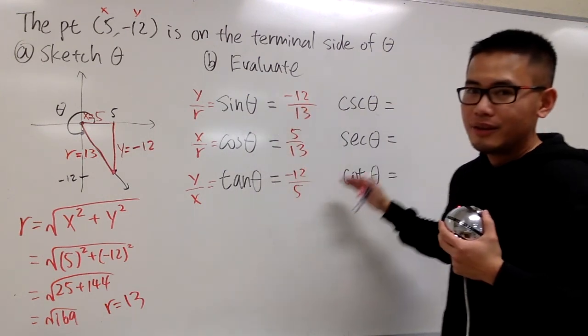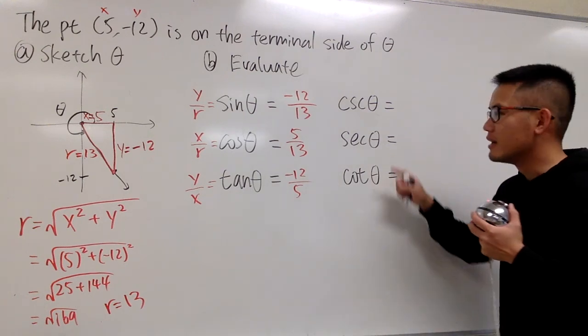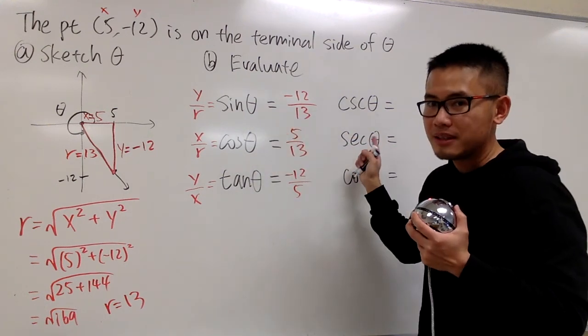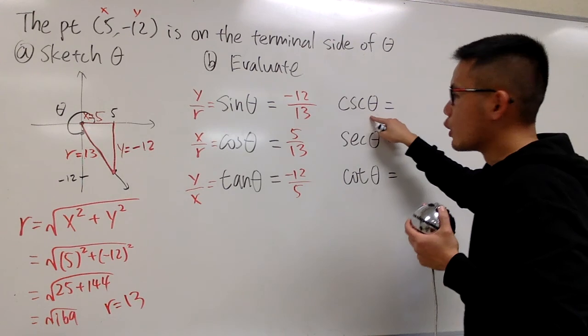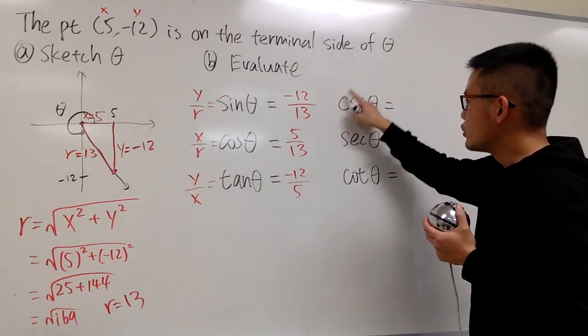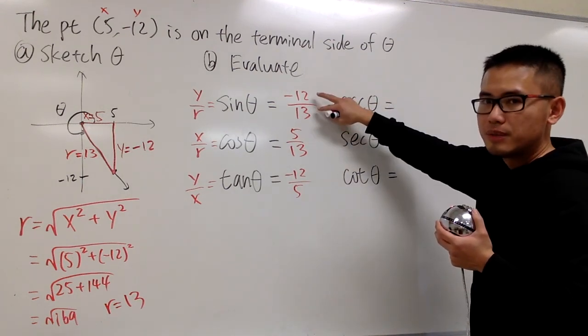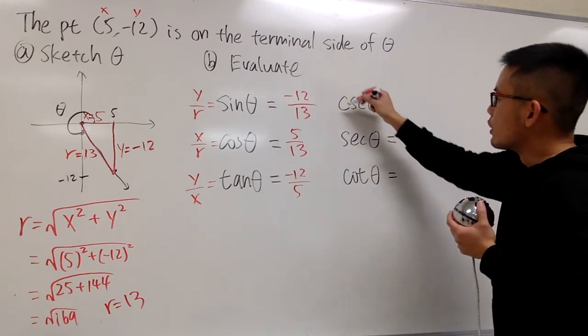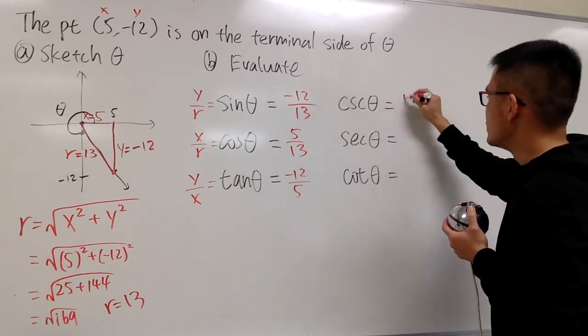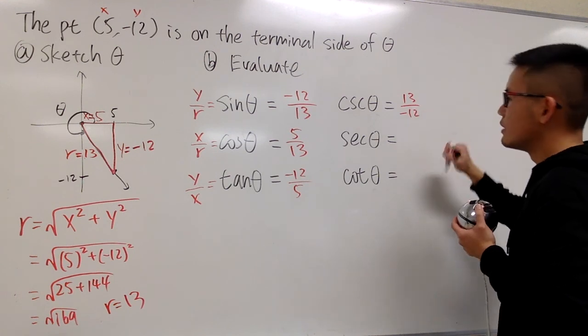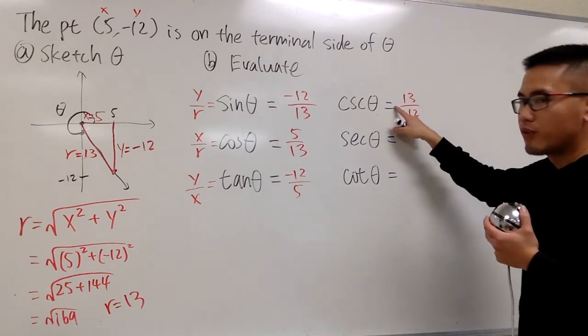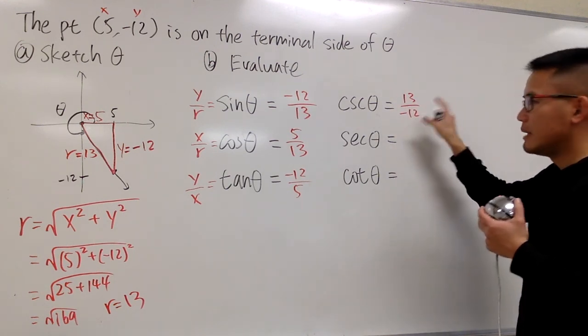Because once you have these three done, these right here are pretty much for free. Because if you set this up correspondingly, sine theta, cosecant theta, you know the relationship of this. And that is, you just flip this. You do the reciprocal. Cosecant theta is just, you flip that, which is 13 over negative 12. Of course, you can put the negative in the front or on the top, doesn't matter, but let me write it down this way.